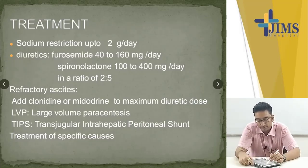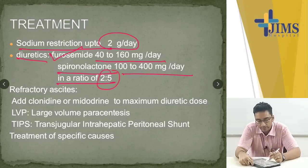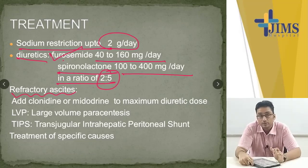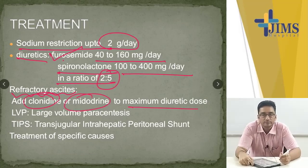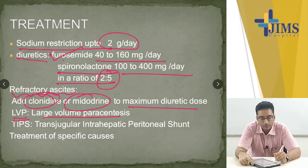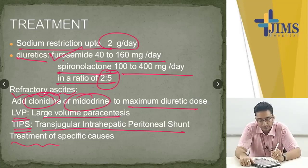Treatment of ascites: mainly sodium restriction up to 2 grams per day. Diuretics: furosemide 40 to 160 mg per day and spironolactone 100 to 400 mg per day in a ratio of 2:5 (furosemide to spironolactone). In cases of refractory ascites where ascites is not decreasing with maximum doses of diuretics with the patient compliant to both drugs and diet, you can add clonidine or midodrine. Other options for refractory ascites are large-volume paracentesis or TIPS — transjugular intrahepatic portosystemic shunt. You must also treat the specific cause of ascites.